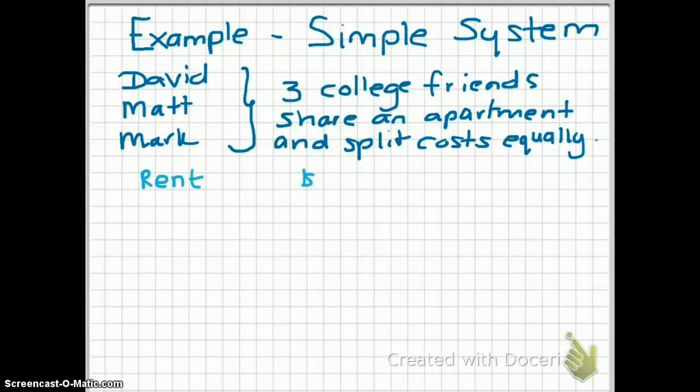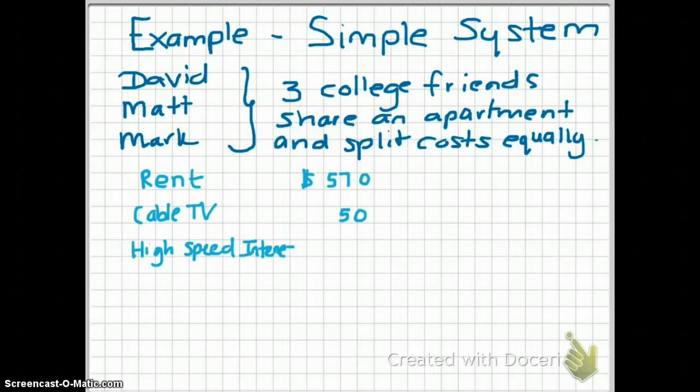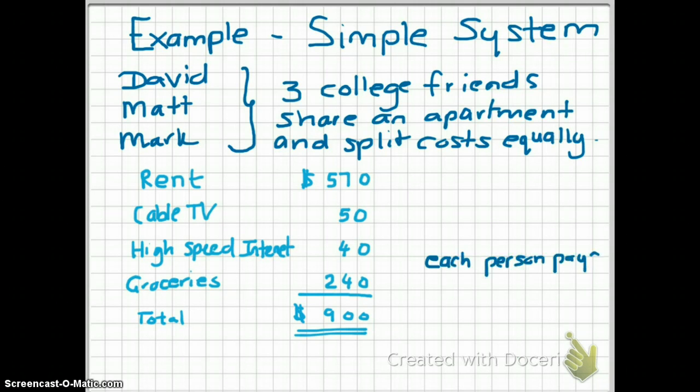They'll split up the cost of rent, cable TV, high-speed internet, and groceries equally. The total cost of what they're going to be splitting up is $900, so each person will be paying $300 a month.